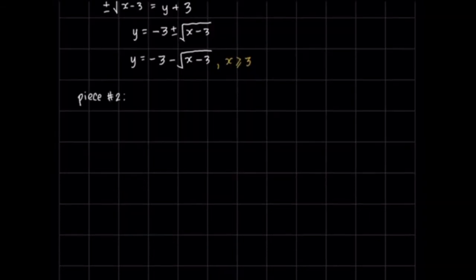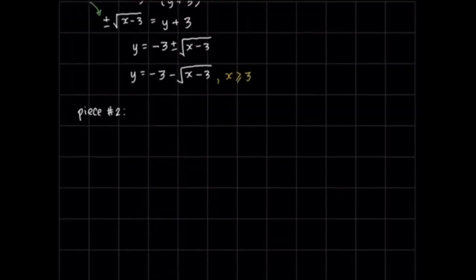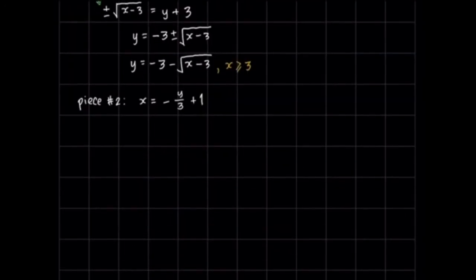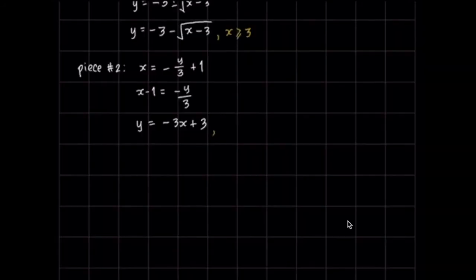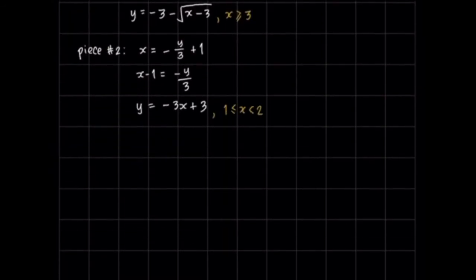Let's take a look at the second piece. Interchanging x and y, we have x = −y/3 + 1. Solving for y: x − 1 = −y/3, then multiplying both sides by 3 gives y = −3x + 3. Looking back at our original piecewise function, the second piece has y values from −1 inclusive up to 2 exclusive. So for its inverse, it will be defined when x is greater than or equal to 1 but less than 2.